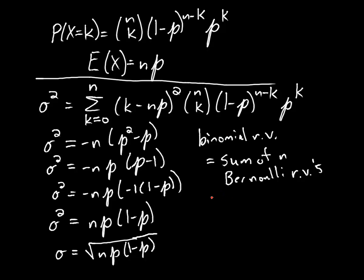And for a Bernoulli random variable, the variance was p times 1 minus p. So we had n Bernoulli random variables, each one of those has variance p times 1 minus p. And when we add those random variables together, the variance is n times p times 1 minus p.